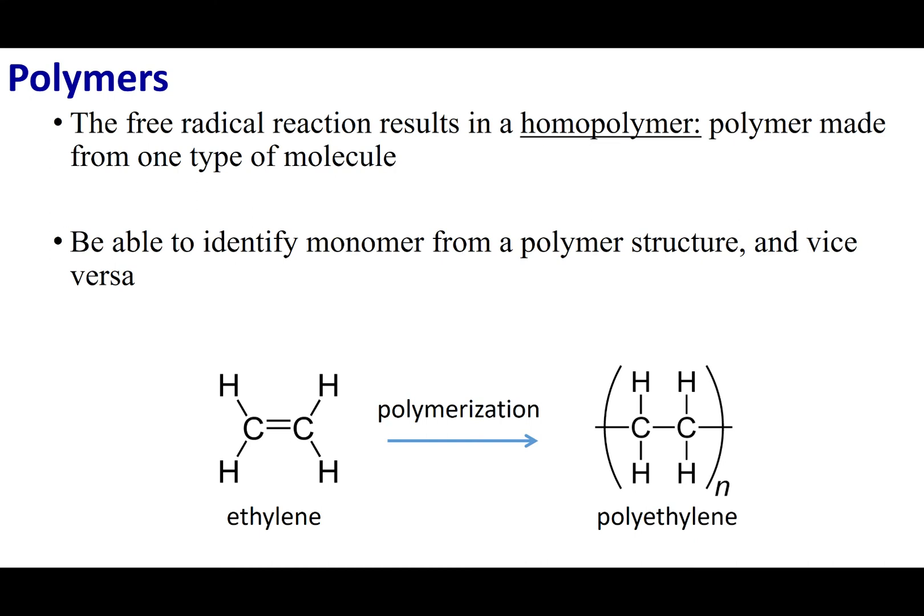Now, when I do the free radical polymerization, what I make are what's called homopolymers. And that means I took one monomer, stuck it together, and I'm repeating that monomer over and over and over again. What I want you guys to be able to do is to tell me what the structure of the polymer is going to be.